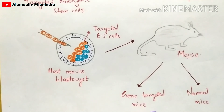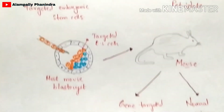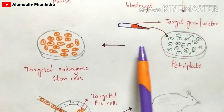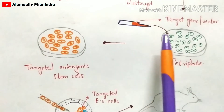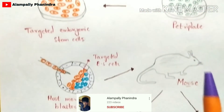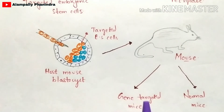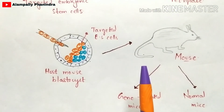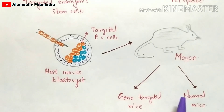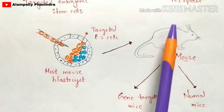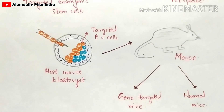Of the two offspring produced, one will be gene-targeted mice and the other will be normal mice. Gene-targeted mice exhibit the characteristics of the target gene that was introduced. The other offspring will exhibit the characteristics of the normal host mouse that was chosen.